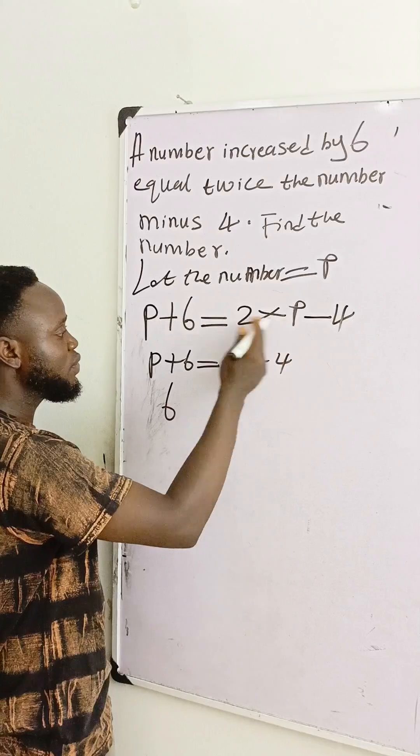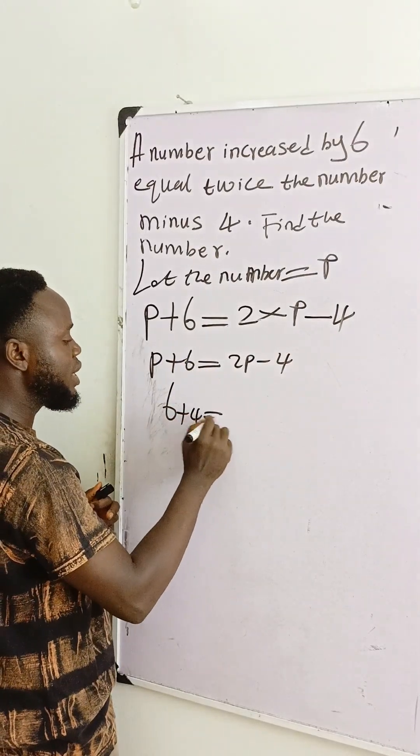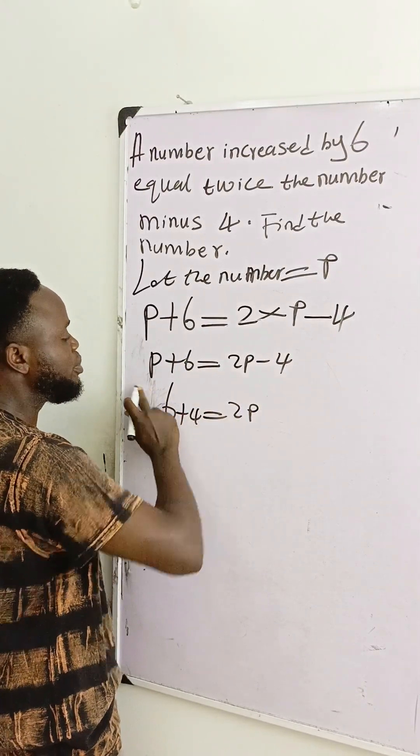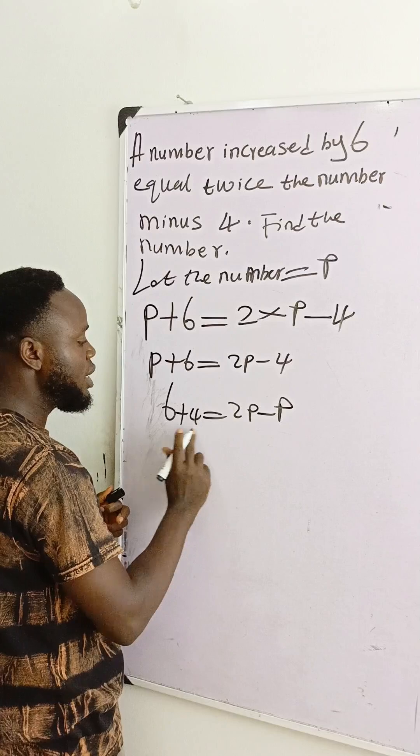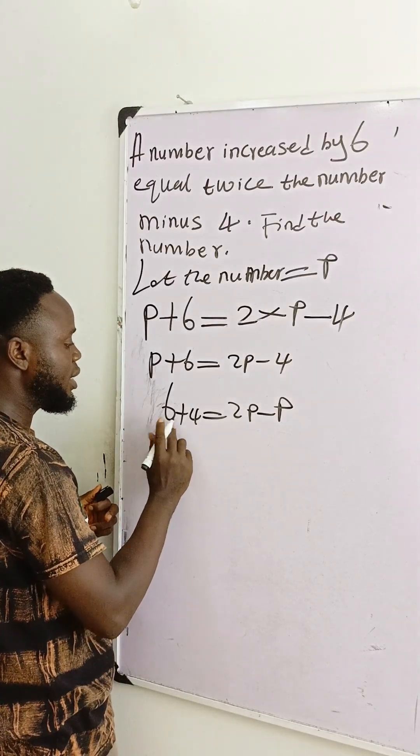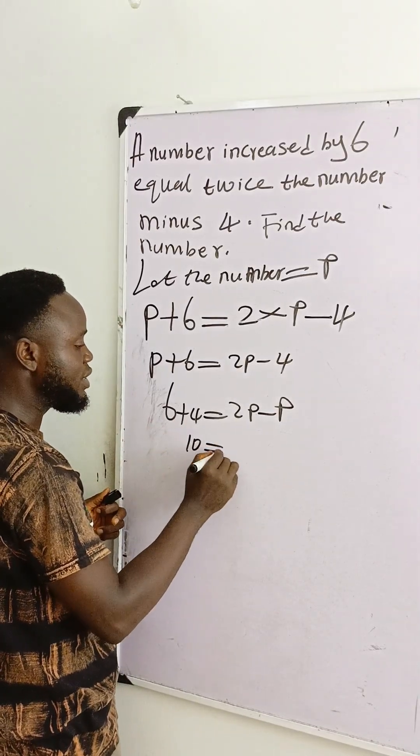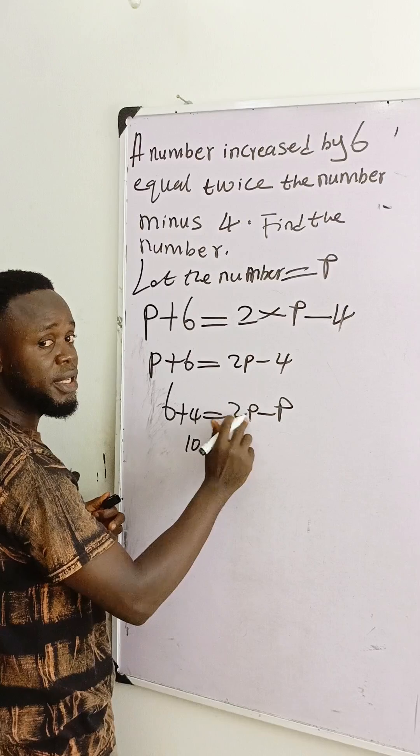Six is here, minus four will cross here and becomes plus four. This is equal to 2P. Plus P will cross here as minus P. And we have here six plus four is ten, which is equal to 2P minus P.